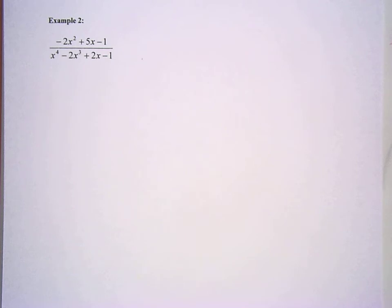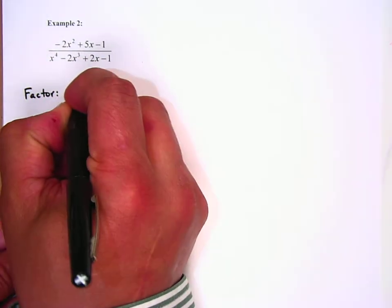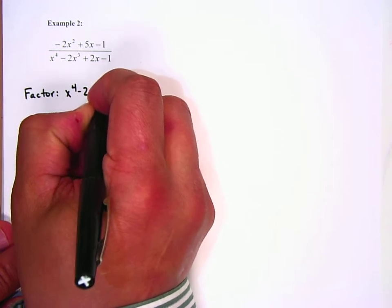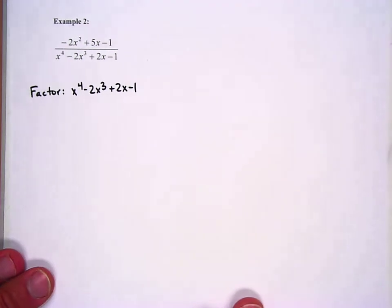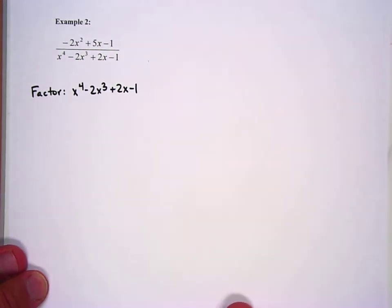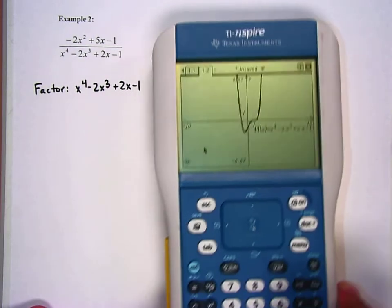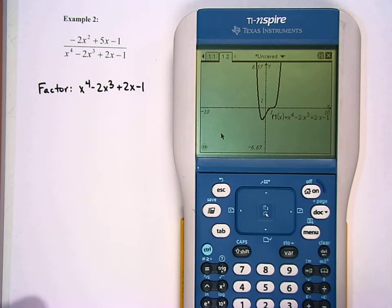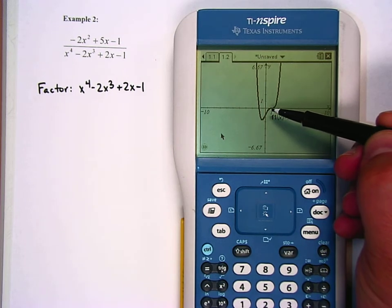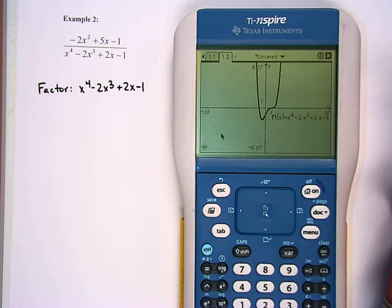The first thing we've got to do is factor x to the 4th minus 2x cubed plus 2x minus 1. I was thinking about grouping this, but that's not going to work. So what I'm going to do is graph it. Looking at the graph, we can see that 1 is a zero and negative 1 is a zero.